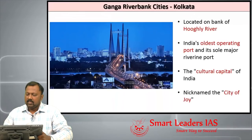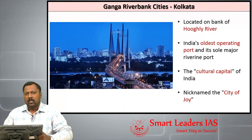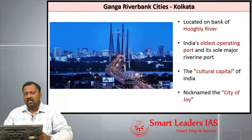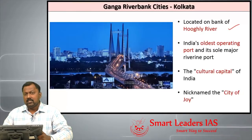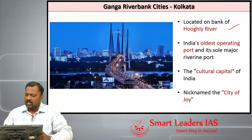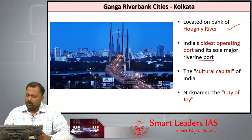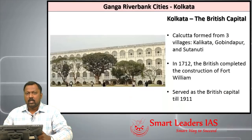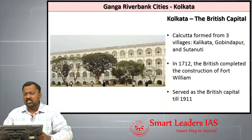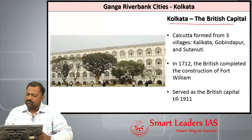Let us see some points about Kolkata. Now it is called Kolkata, but historically it was also called Calcutta. Kolkata is located on the bank of River Hooghly. It is here that the oldest operating port, Diamond Harbor, is located — the sole major riverine port in India. Kolkata is also the cultural capital of India, nicknamed the 'City of Joy,' and served as the British capital for a very long time.